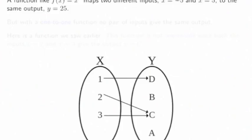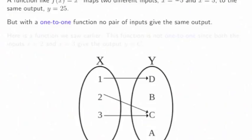A function like f(x) = x² maps two different inputs, x = -5 and x = 5, to the same output, y = 25. But with a one-to-one function, no pair of inputs give the same output.